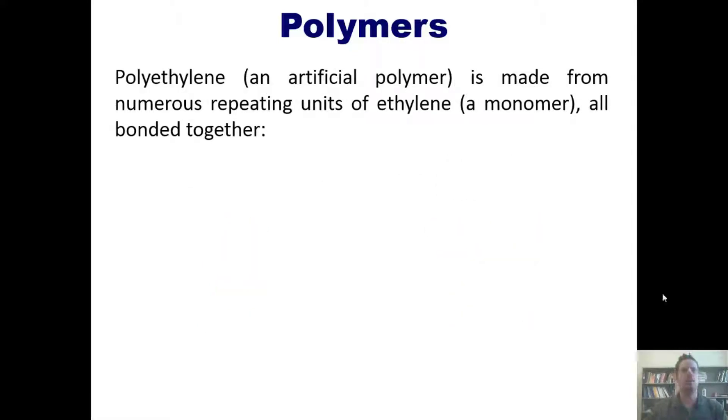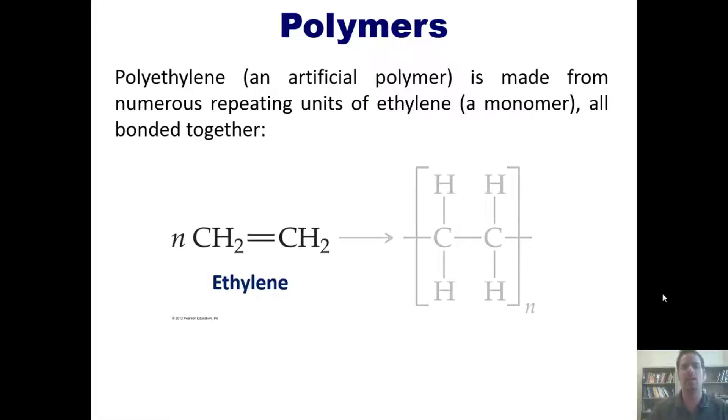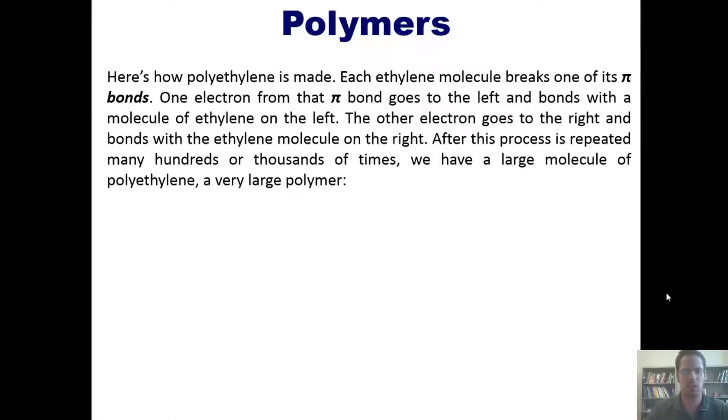Polyethylene is an artificial polymer, and it's made from numerous repeating units of ethylene whose structure is shown here. Ethylene, by the way, is also called ethene. If you take many different molecules of ethylene and bond them all together in a huge chain, you get polyethylene, which is essentially a big long chain of carbon atoms. Here's how that actually happens.